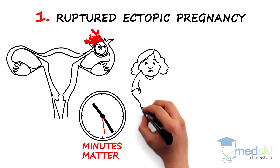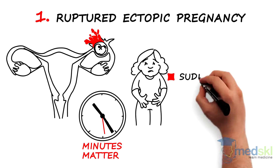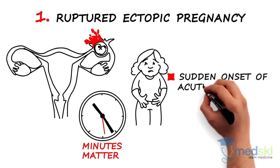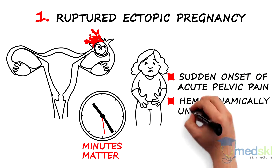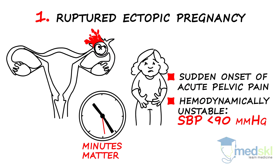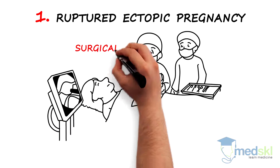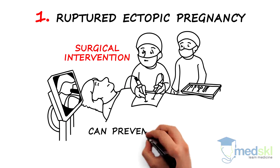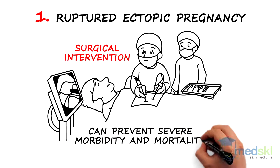Think of this when a reproductive-aged woman presents with sudden onset of acute pelvic pain and is hemodynamically unstable. This is a clinical diagnosis. Immediate surgical intervention can prevent severe morbidity and mortality.